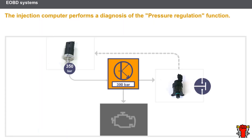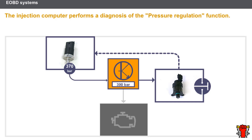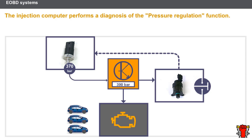The injection computer performs a diagnosis of the pressure regulation function. If there is a fault on the high-pressure circuit, the computer corrects the pressure regulator command. The pressure sensor informs the computer of the true pressure inside the rail. If the computer observes a difference between the programmed value and the true pressure, it diagnoses a fault. If the fault is detected in three consecutive trips, the EOBD warning light is activated.